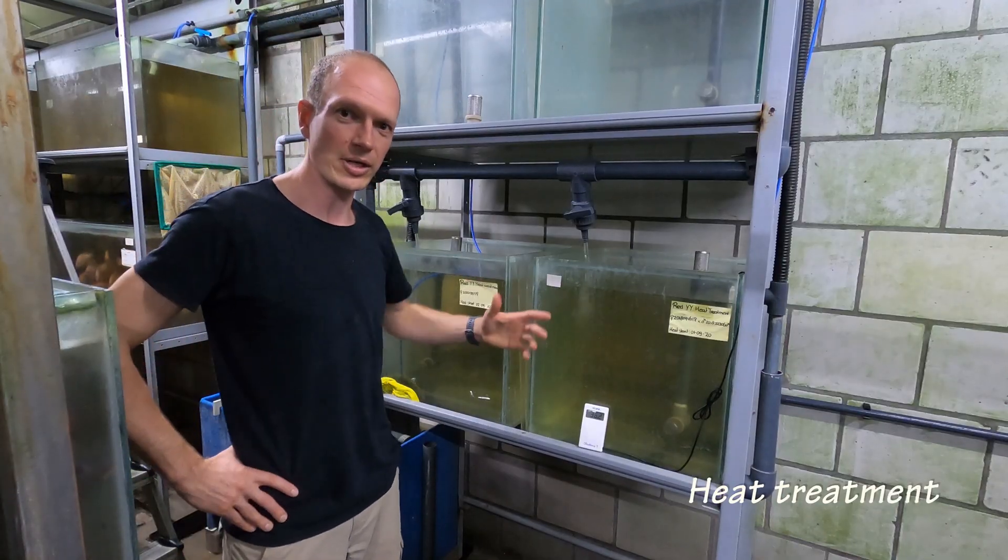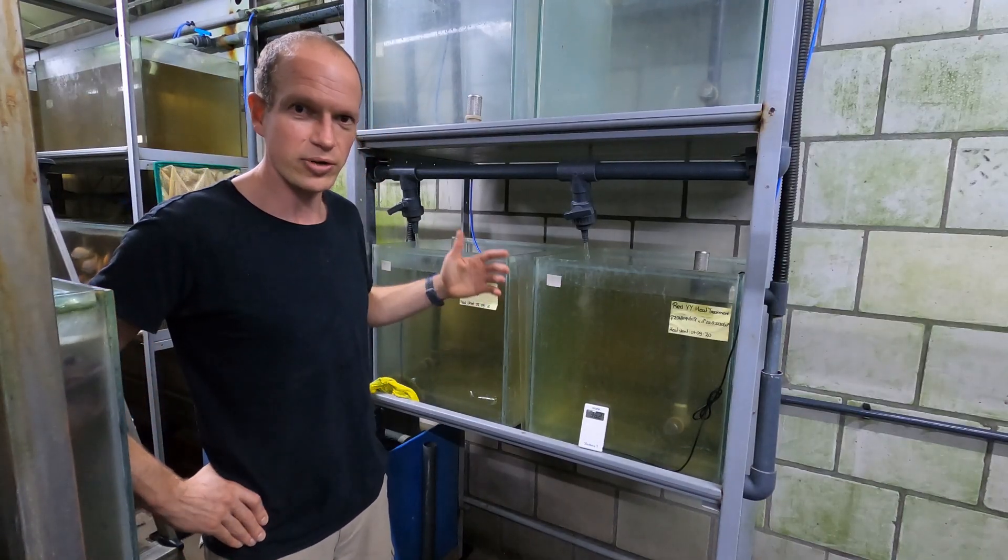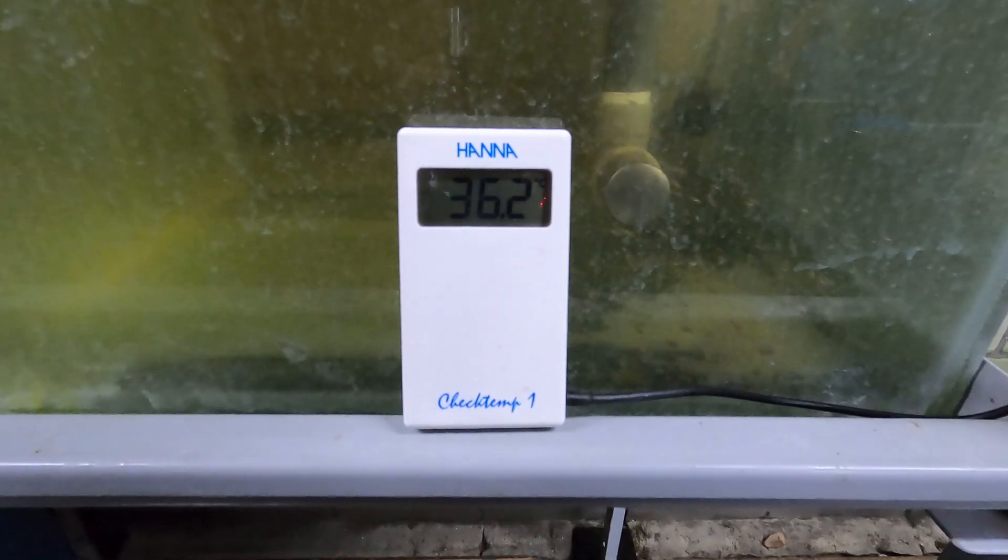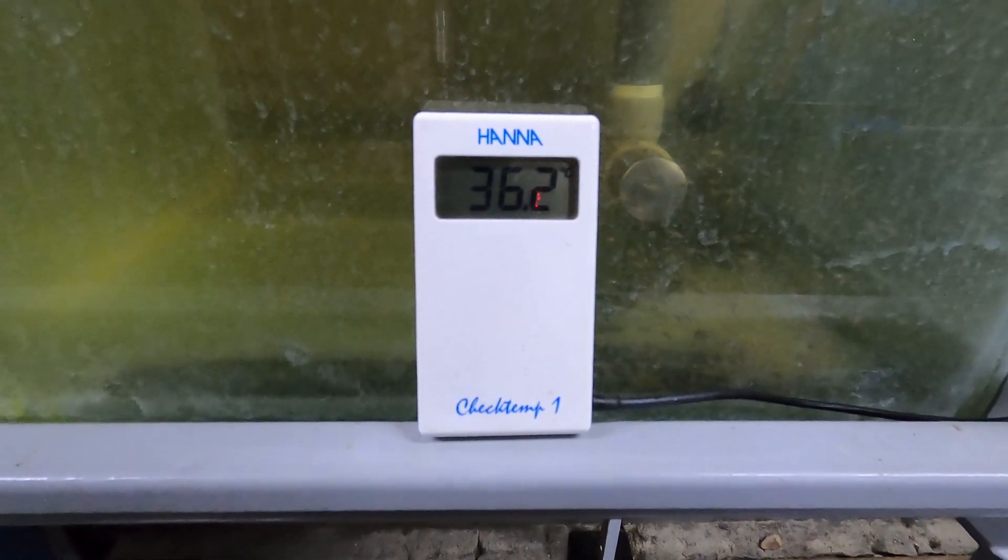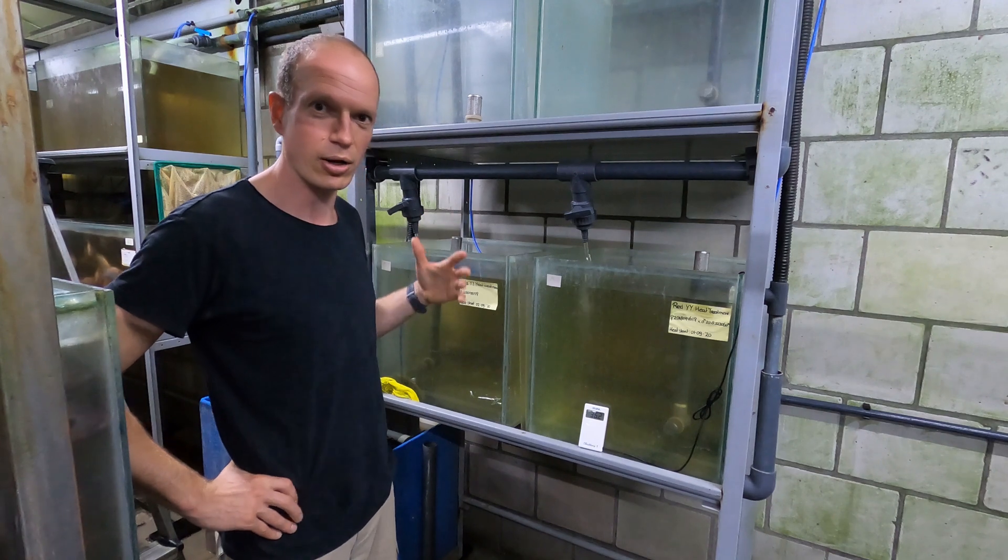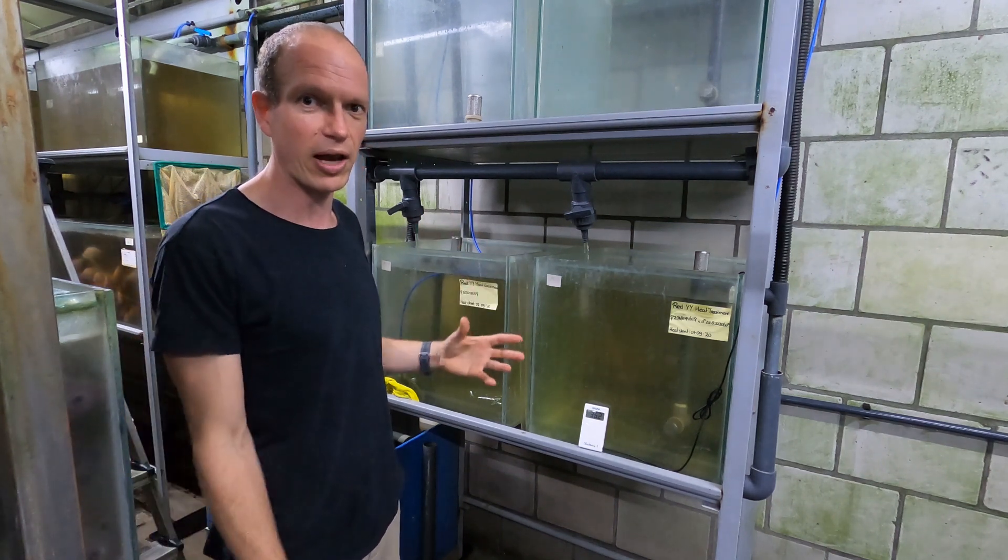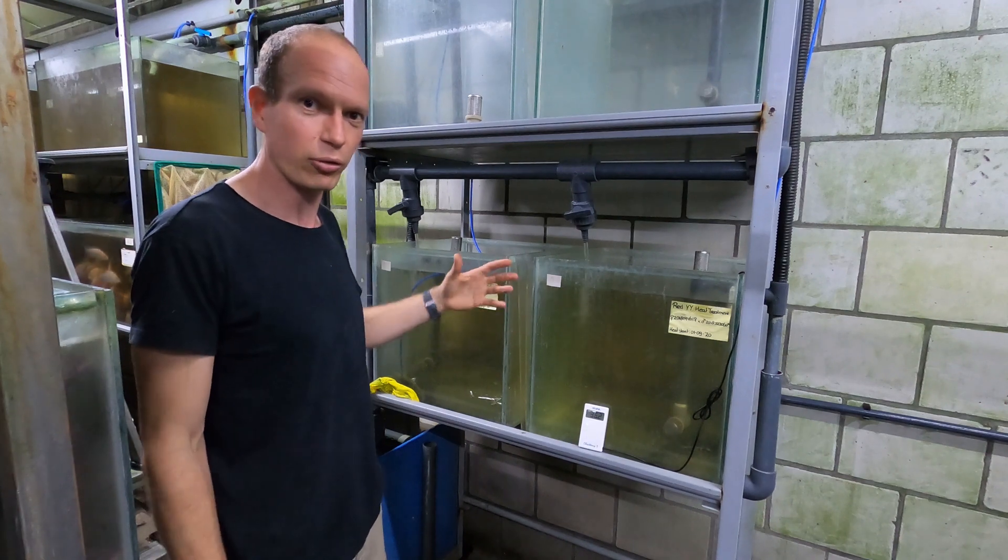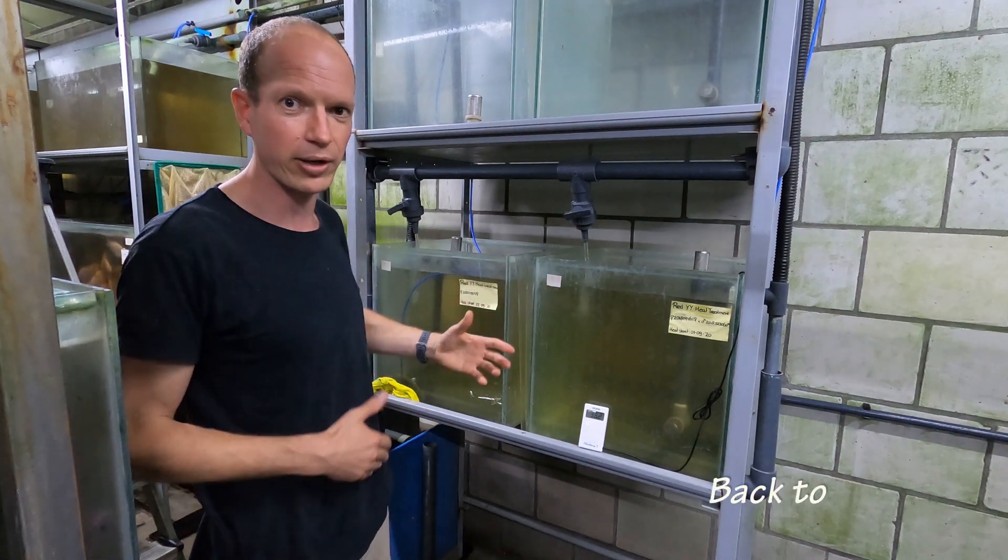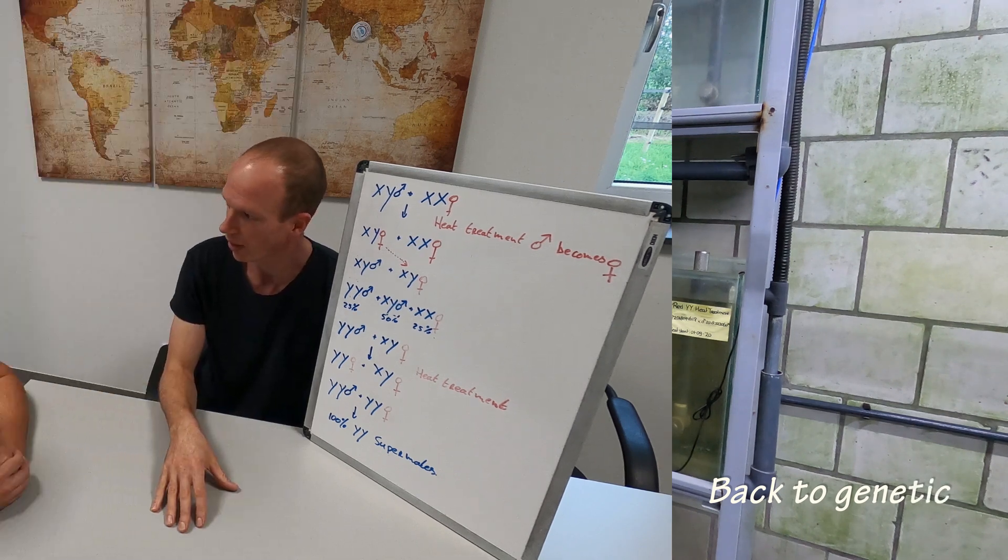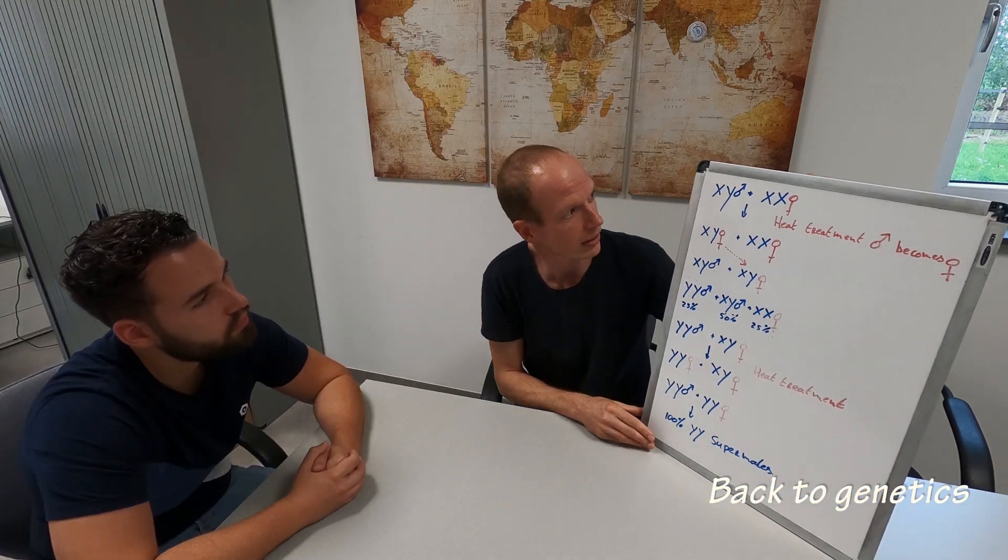Here we are with a heat treatment system where they are transferred directly after hatching to 36 degrees. So that due to the high temperature some of the males will develop as females. After three weeks they are transferred back to 27 degrees. That works in a schedule like this.